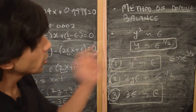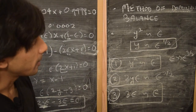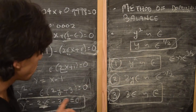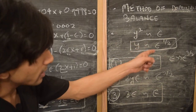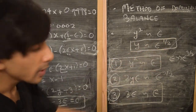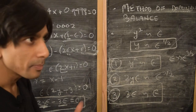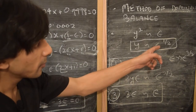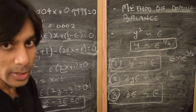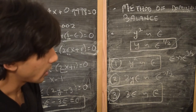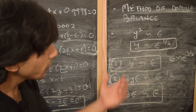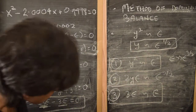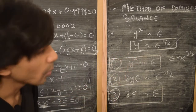Welcome back. In the previous part, by the method of dominant balance, the variable y that we're solving for should scale as ε to the power of one-half. This is the first time we're seeing that a perturbation expansion could also have fractional powers of epsilon. We'll see the whole series and how that comes about — so how do we use this information to solve for the roots of this equation?